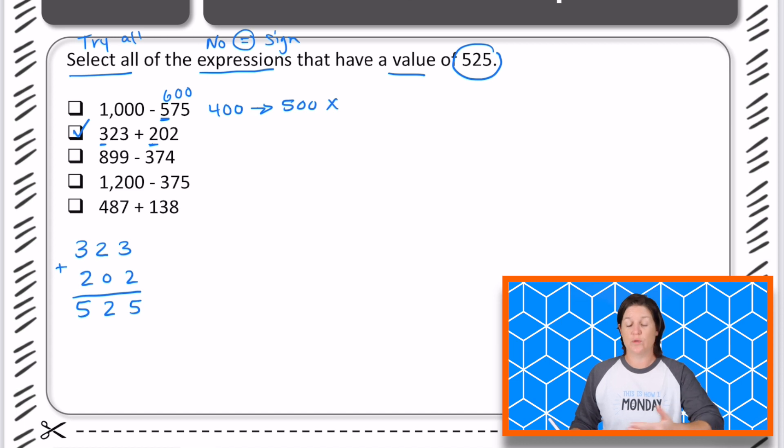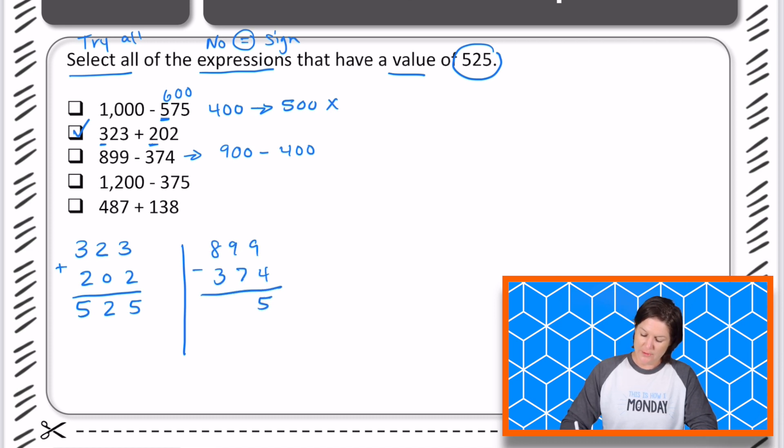Now again, this is a multi-select, so we're going to walk through all of them. The next one would round to 899 rounds to about 900 and 374 rounds to about 400 and 900 minus 400 is close to 500. So I'm actually going to go ahead and solve this one out too, just to make sure that lets me know I'm close. And we do, we get an answer of 525. So we'll mark that one.